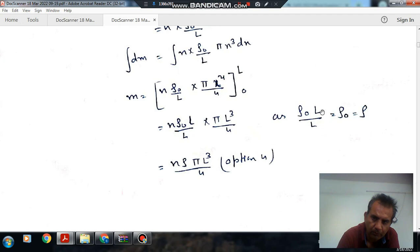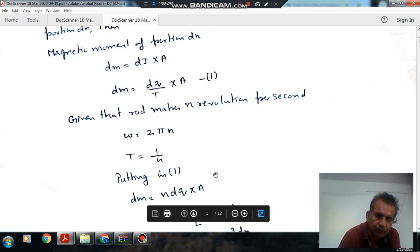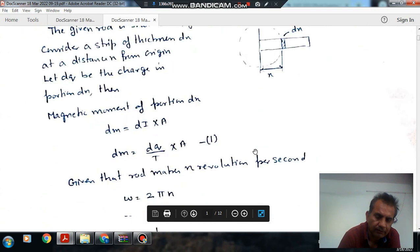So this will be nρ₀πL³/4, option 4 in the right corner.